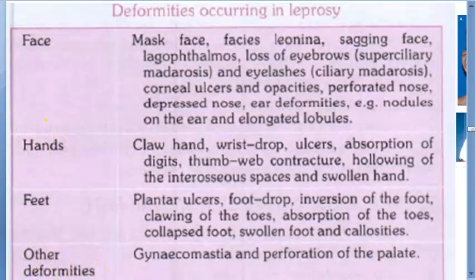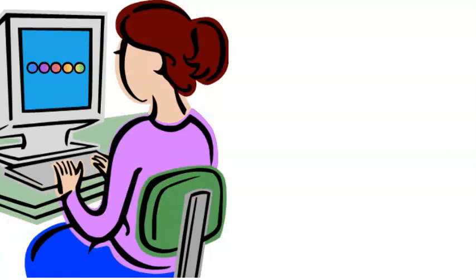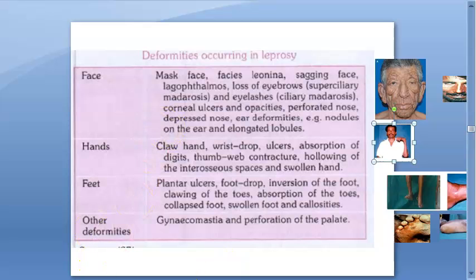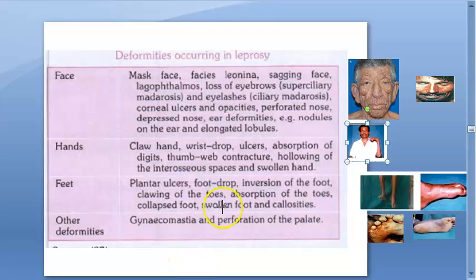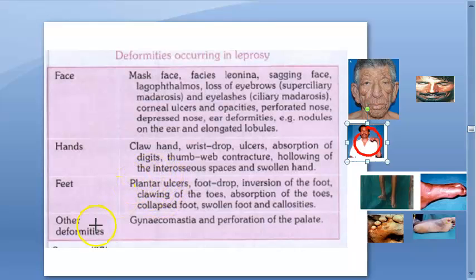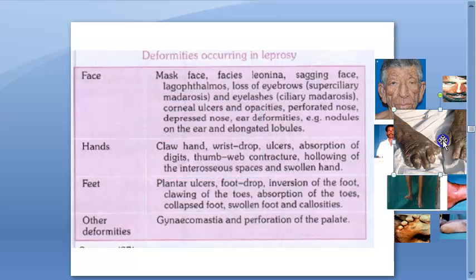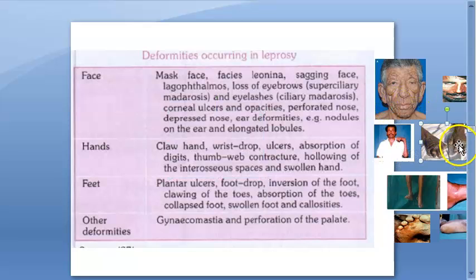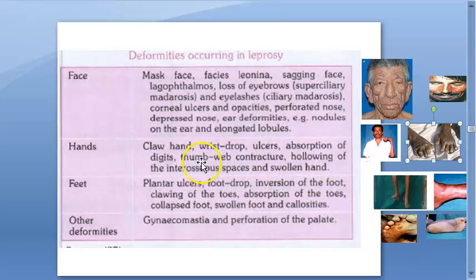Now moving on to the hand. Claw hand can happen — all fingers are like a claw. Wrist drop occurs because of radial nerve involvement, and ulnar nerve involvement also occurs. Ulcers can be there on the hand. Absorption of digits — the digits themselves undergo atrophy. Thumb web contracture, hollowing of the interosseous spaces, and swollen hands are also seen.